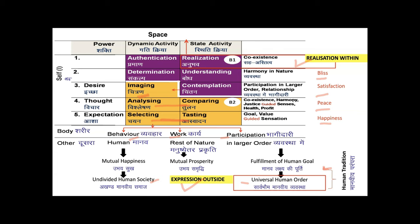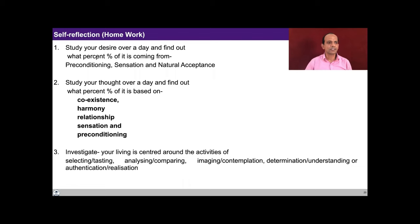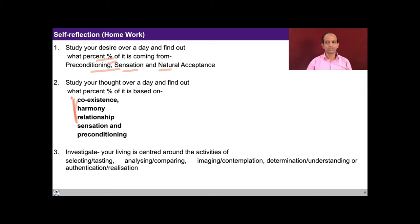We saw how the higher level activities guide the lower level activities and how transformation takes place in the self. You need to study your desires over a day and find out what percentage are coming from preconditioning, sensation, and natural acceptance. You can study your thought over a day and find out what percentage is based on relationship, harmony, sensation, and preconditioning. As you enter into self-exploration and activate the higher level activities, this percentage goes up, the dependence on sensation for happiness comes down, and the preconditionings get evaluated and guided by knowing.